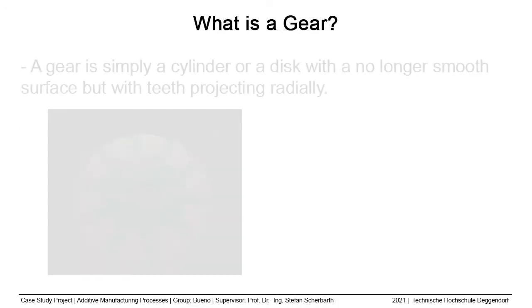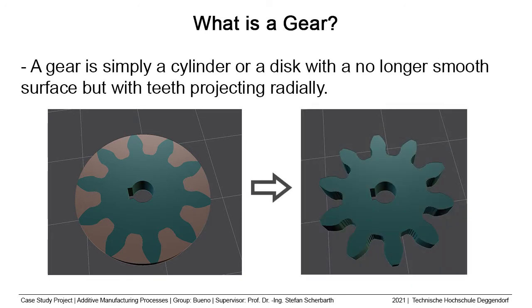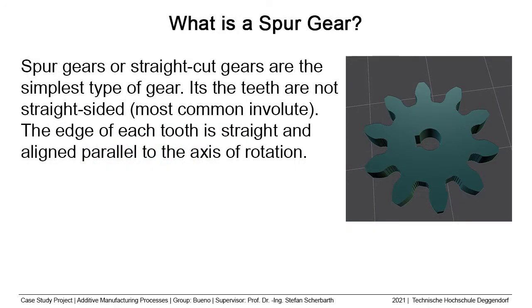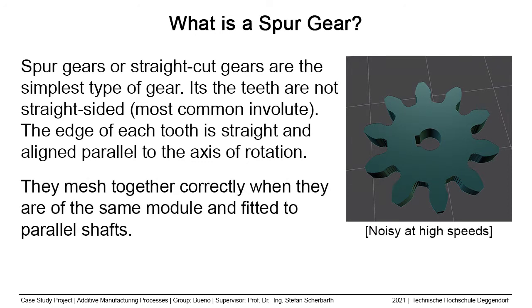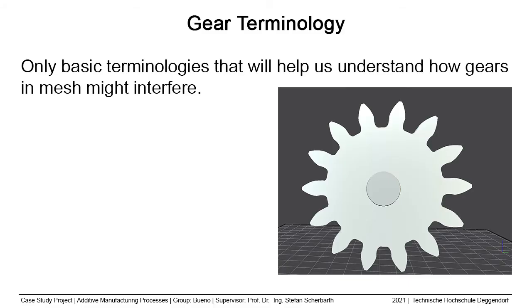What is a gear? A gear is a cylinder or disc with a no-longer-smooth surface but with teeth projecting radially. Spur gears, or straight cut gears, are the simplest type of gear — and by simple it does not mean easy. These gears mesh together correctly when they are the same module. Spur gears are excellent at moderating speeds but tend to be noisy at high speeds. In this part we will show some basic yet important terminologies that will help us understand what actually goes on between two gears that are enmeshed together.